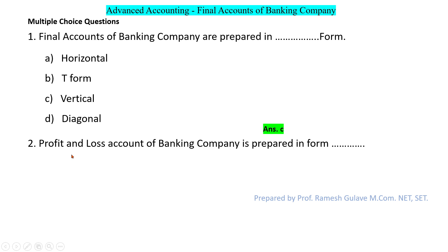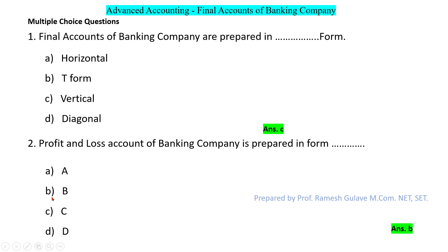The next question says the profit and loss account of a banking company is prepared in which form. The balance sheet is prepared in Form A and the profit and loss account is prepared in Form B, so option B is the right answer.